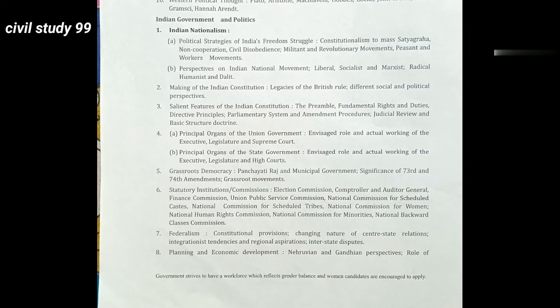4. Salient Features of the Indian Constitution: the Preamble, Fundamental Rights and Duties, Directive Principles, Parliamentary System and Amendment Procedures, Judicial Review and Basic Structure Doctrine. 5. Principal Organs of Union Government: Envisaged Role and Actual Working of the Executive, Legislature and Supreme Court. Principal Organs of State Government: Envisaged Role and Actual Working of the Executive, Legislature and High Courts.